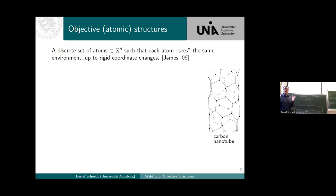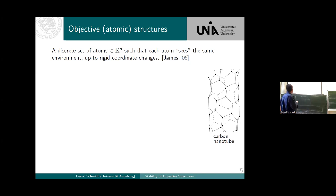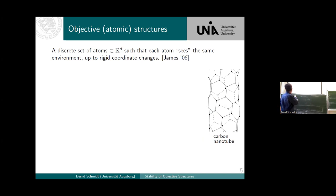Not only do you see exactly the same environment, but if you go to another position, you just have a translation of what you see. Now, a discrete set of atoms which sees the same picture, but not modulo translations — rather after a coordinate change, after an isometry — is called an objective structure.